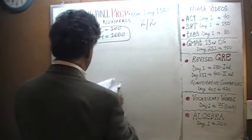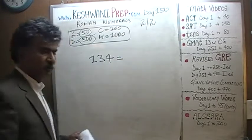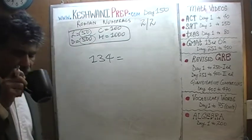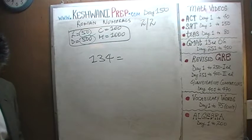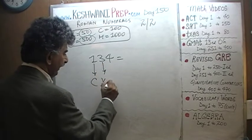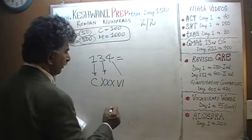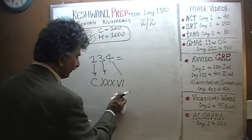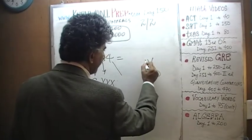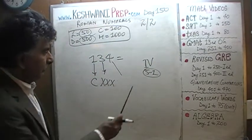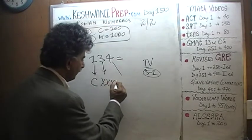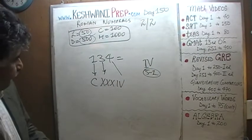One hundred and thirty-four. Pause the video and do it yourself — you will get more out of it. One hundred is C. Thirty is simply XXX — X plus X plus X. Then the four: if we want four, we write V and then I on the left-hand side, so it becomes five minus one. If a lower number appears to the left of a higher number, we subtract it. So four is IV. There we go — one hundred and thirty-four.